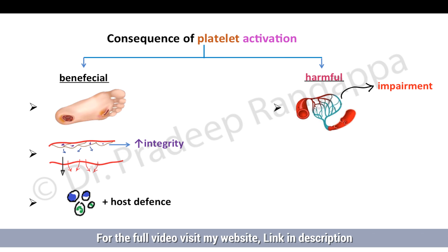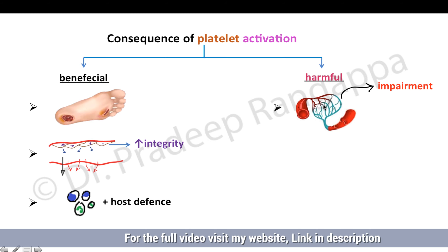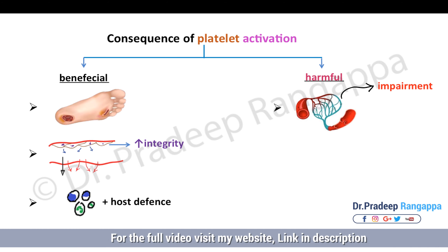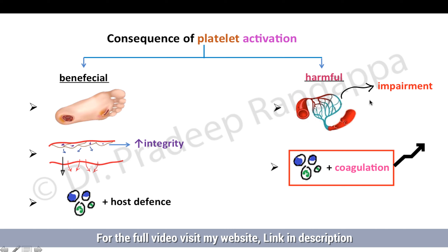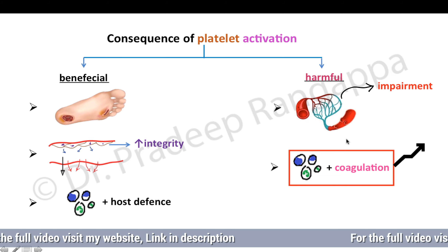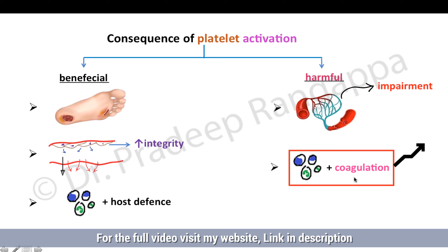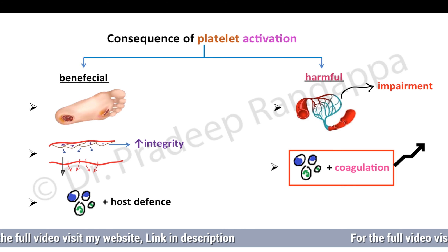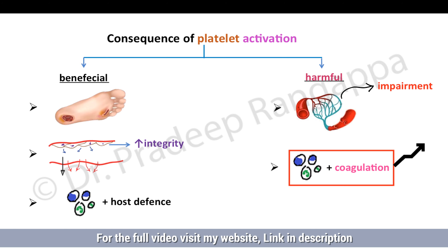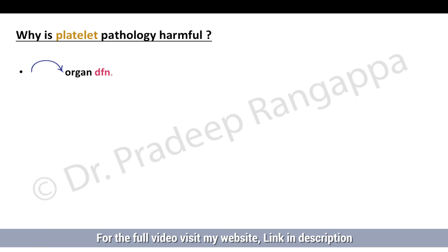The harmful effects: thrombocytopenia can lead to impairment of the capillary network. When platelets get activated, there will be a pro-thrombotic state, with platelet clumps forming in the microcirculation. This can lead to tissue hypoxia and organ dysfunction. There can also be cascading of the pro-inflammatory effect and worsening of coagulopathy due to platelet activation. These are the broad headings under which beneficial and harmful effects of platelet activation occur.